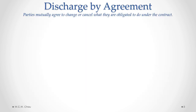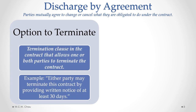Contractual obligations can be discharged by agreement, where the parties involved have mutually agreed to either change or cancel what they are obligated to do under the contract. This can be done in a number of specific different ways. The parties may have agreed to put a termination clause in their contract that allows one or both parties to terminate the contract, potentially with some conditions that need to be satisfied. A simple example is a clause stating either party may terminate the contract by providing written notice of at least 30 days.